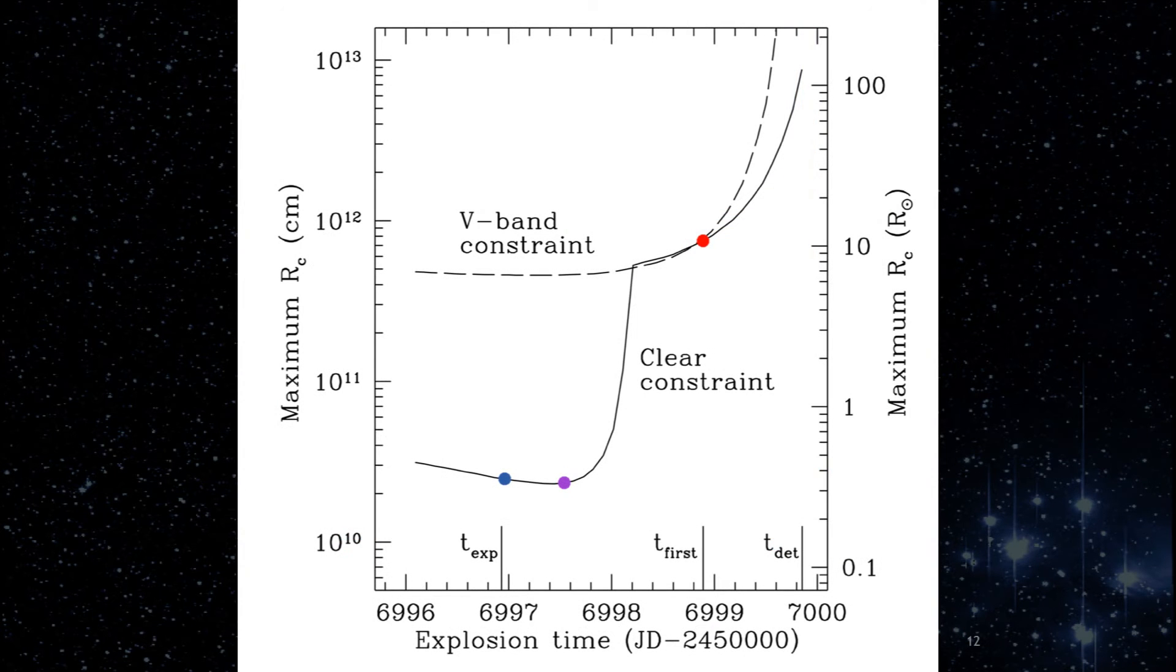We then used both of these explosion time estimates and our pre-discovery data to constrain the presence of shock emission between the supernova ejecta and a possible companion. Here in our figure eight, we constrain the radius of a possible companion depending on the actual explosion time. If the explosion time was near that determined by fitting the absorption lines, our observations rule out a companion larger than about one-third the radius of the sun. If the explosion time was closer to that determined by fitting the early-time light curves, our constraints are weaker.